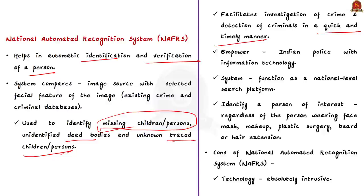Because of these advantages, the government is planning to implement such a system called NAFRS — National Automated Facial Recognition System. The system will empower the Indian police with information technology. After implementation, it will function as a national-level search platform and use facial recognition technology to identify a person of interest. The pros include: identification of criminals, identification of missing persons and children, and identification of dead bodies.